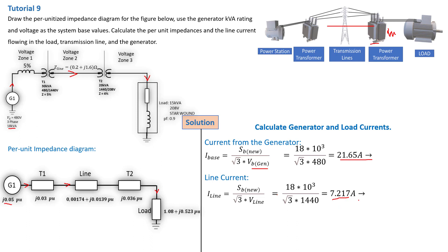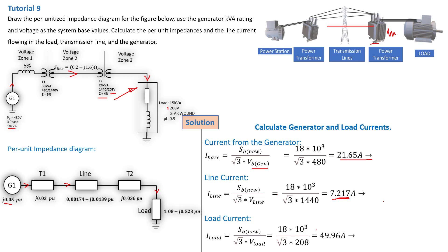The next step is to calculate the current flowing into the load. This current will be different from the transmission line current because we have a step-down transformer — since the voltage is stepped down, the current must shoot up to maintain transformer properties. The load current is I load = S_b,nu divided by (√3 × V load). The motor is at 208 V, so replacing the values: 18×10³ divided by (√3 × 208) gives 49.96 A, basically 50 A.